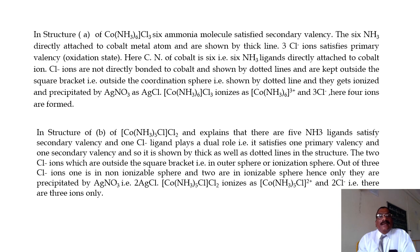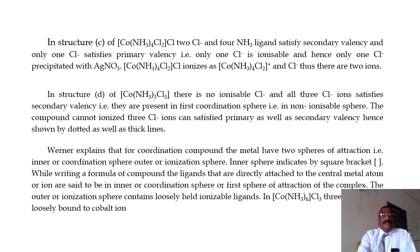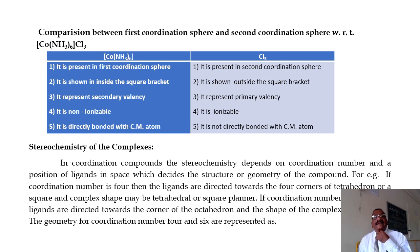In structure A, the 3 Cls represent primary valency while the 6 NH3 groups show secondary valency, and the structure is drawn accordingly. Werner explains the primary as well as the secondary valency, and he also states that for coordination compounds there is a first coordination sphere as well as a second coordination sphere.